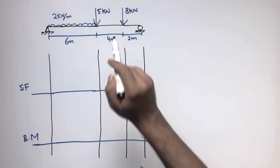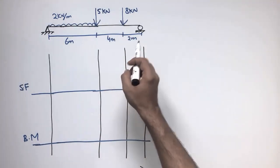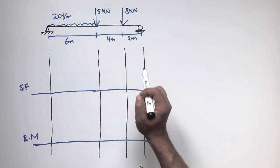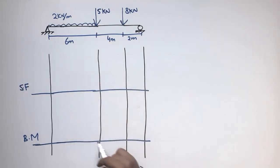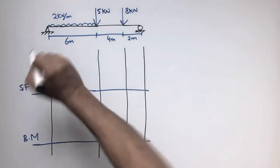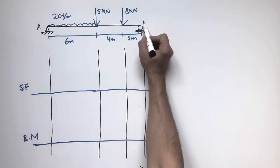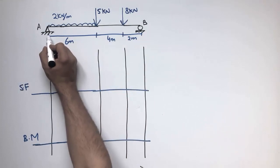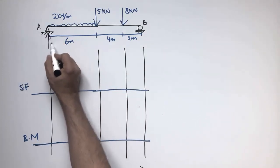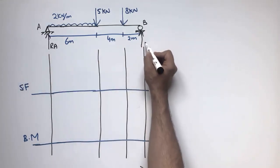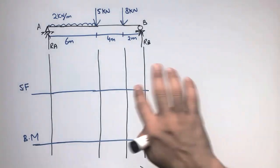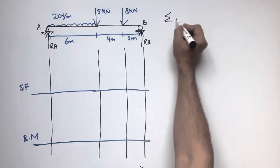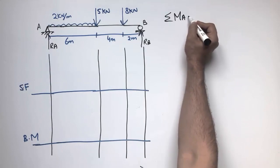We need to analyze this beam, draw the shear force and bending moment diagrams, and find the support reactions. The first step is to find the support reactions. I will call them Ra at support A and Rb at support B. To find them, we take the summation of moments at any point equal to zero — in this case, at point A.